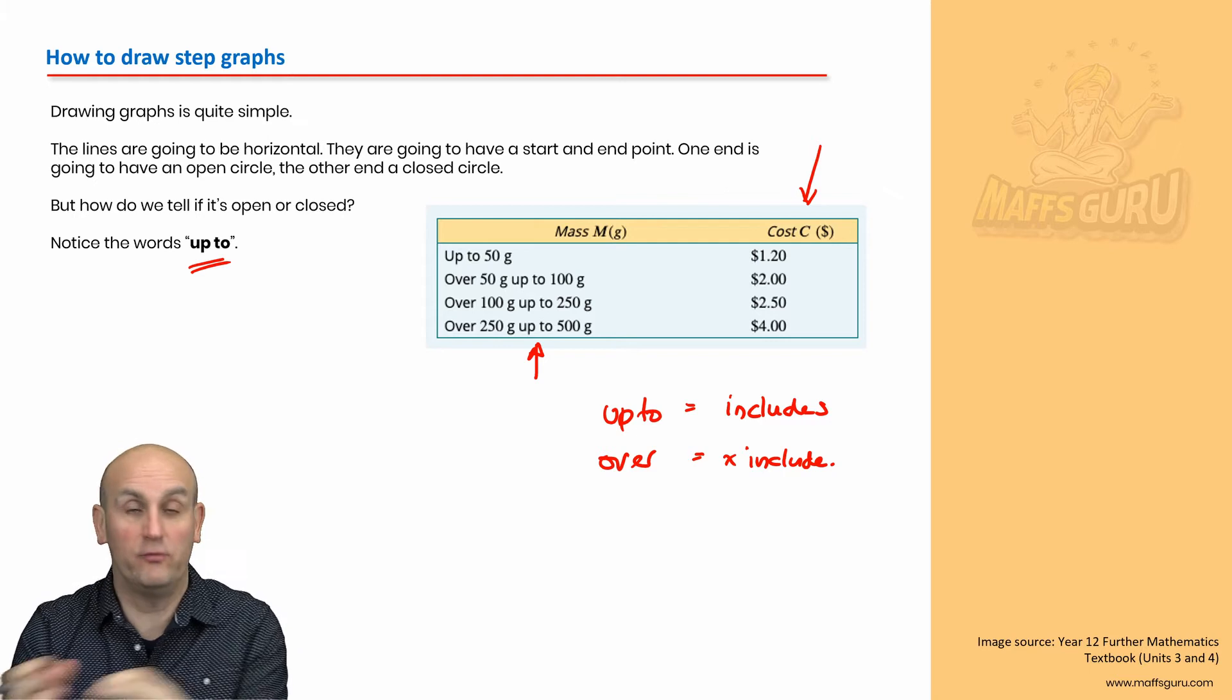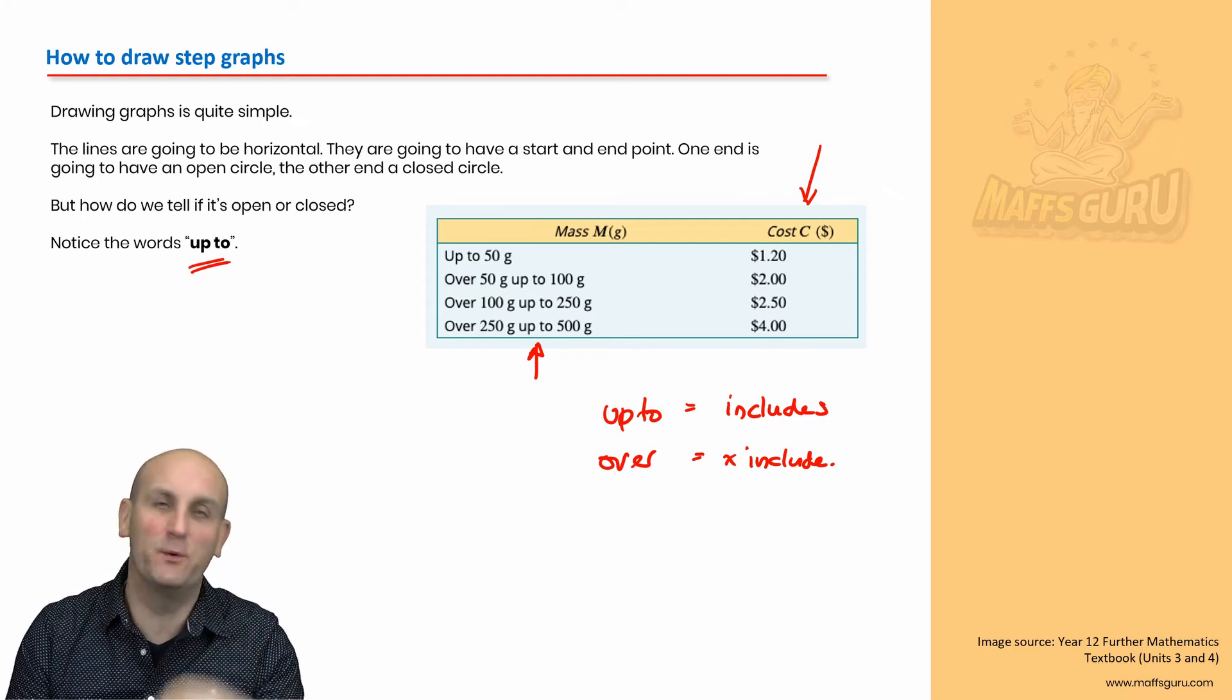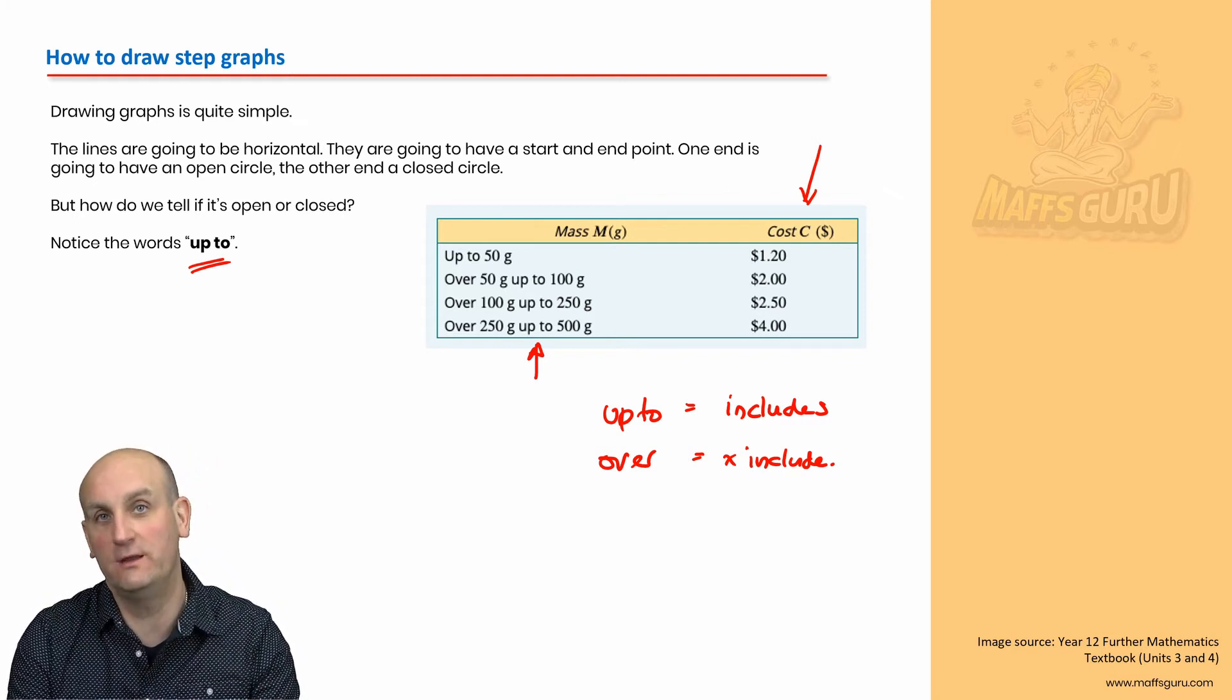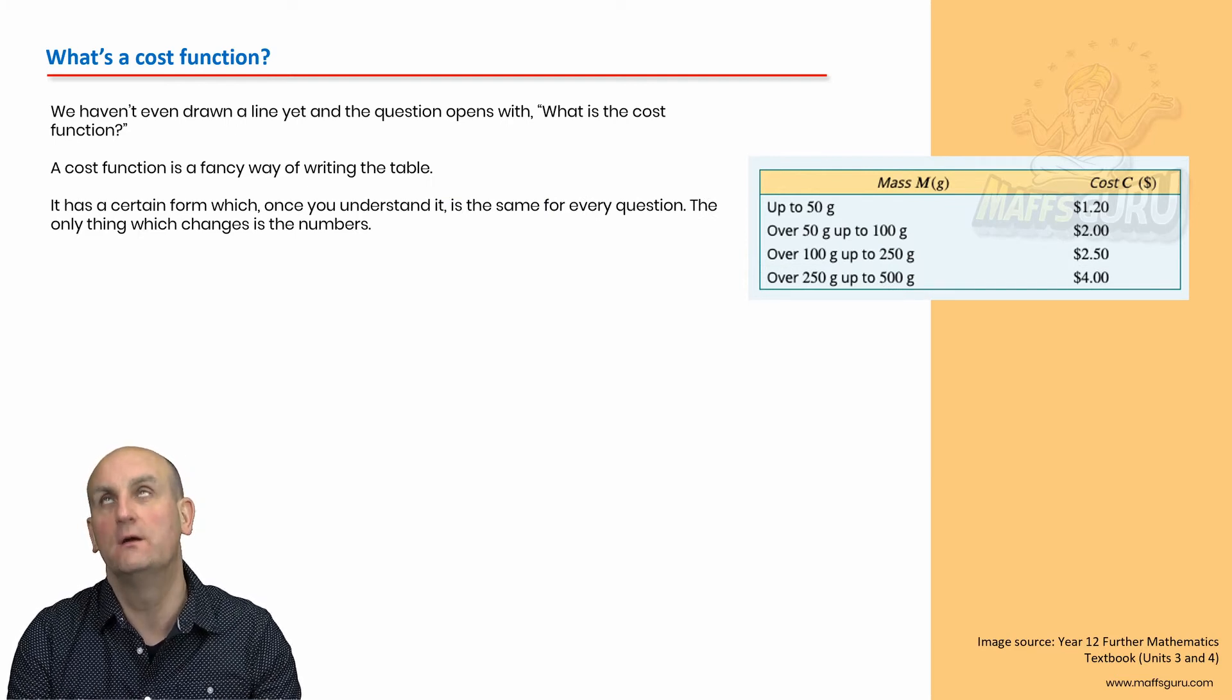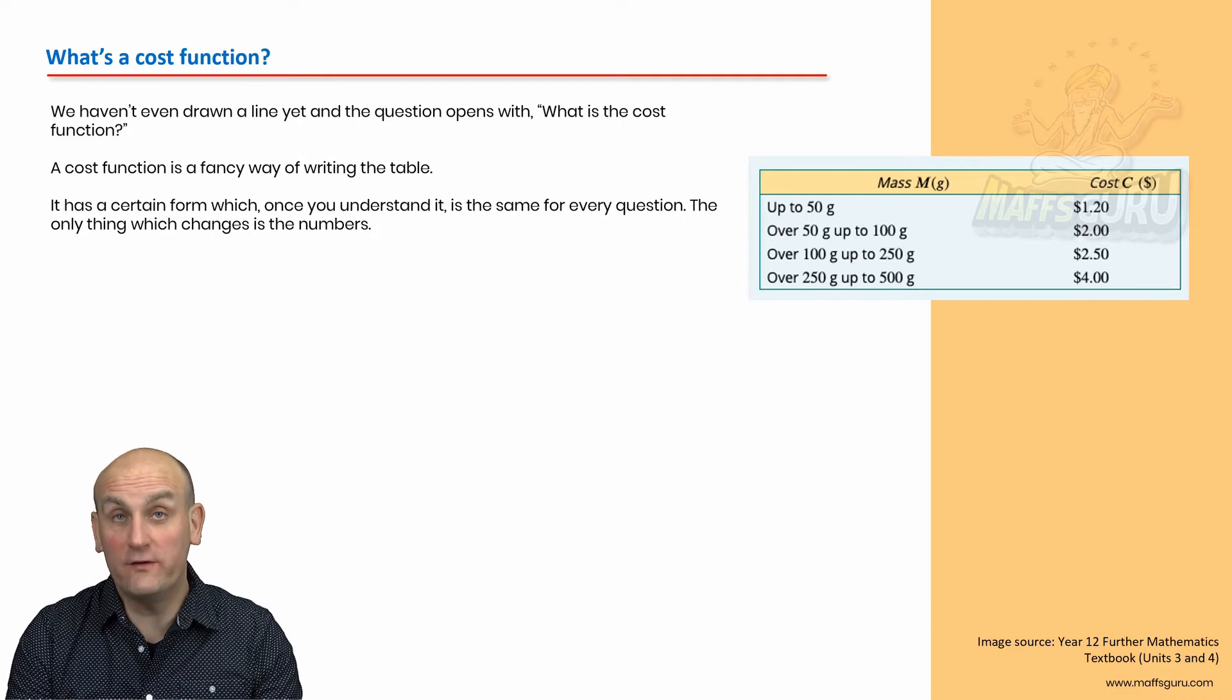If it's over, it means it doesn't include. So, I suppose the question is now, can I use this information and draw the graph? Well, sort of. But, once again, maths is going to try and trick you. Because, lo and behold, ladies and gentlemen, it's going to come up with a cost function.